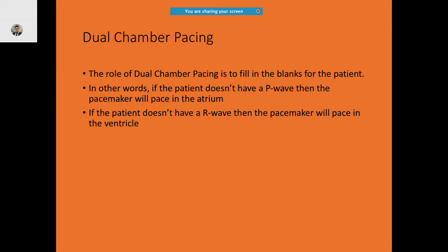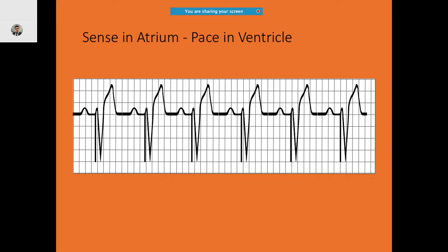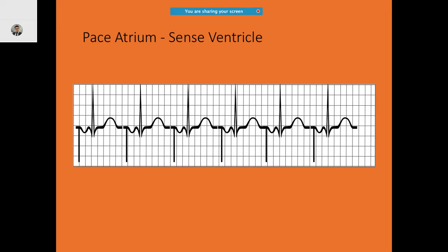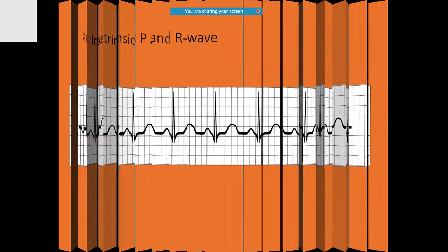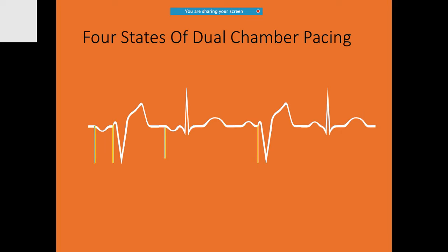The rule of dual chamber pacing is to fill in the blanks: if the patient doesn't have a P wave, the pacemaker will pace in the atrium; if there is no R wave, pacing will happen in the ventricle. On the ECG you can see a pacing spike followed by a P wave, then a narrow QRS — that is the inherent QRS. There are paced atrial beats with ventricular sensing, and also intrinsic P and R waves.